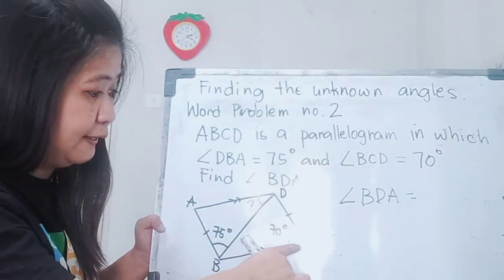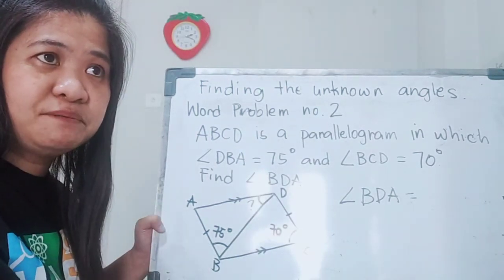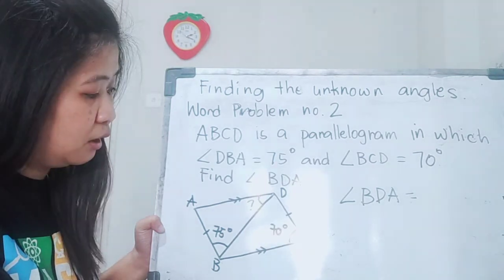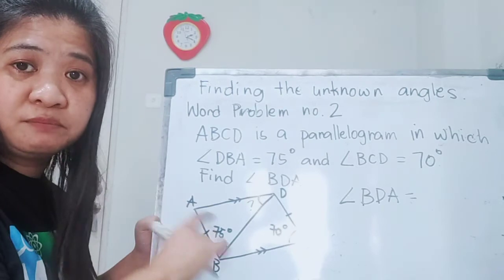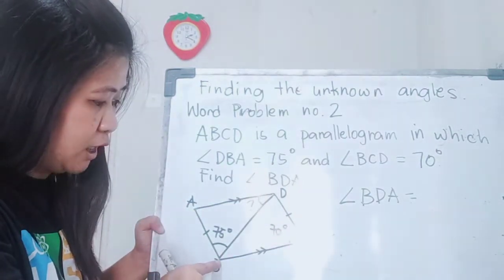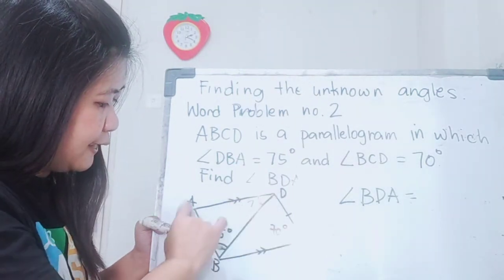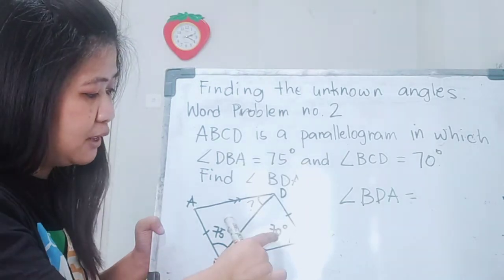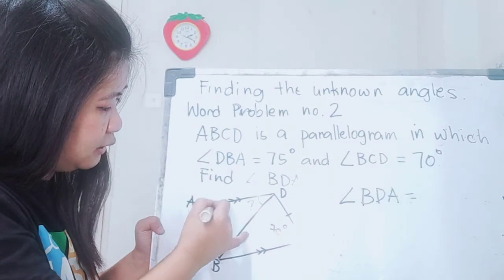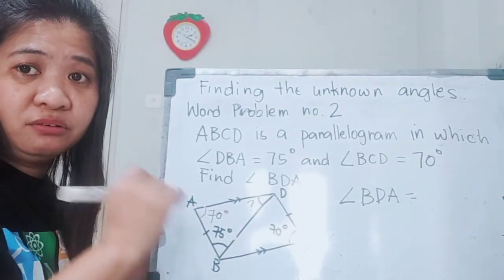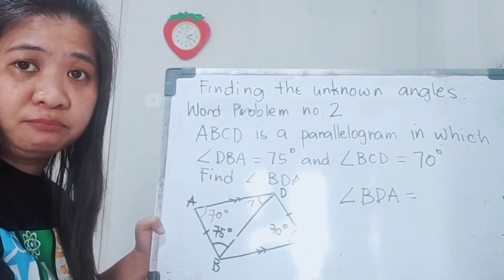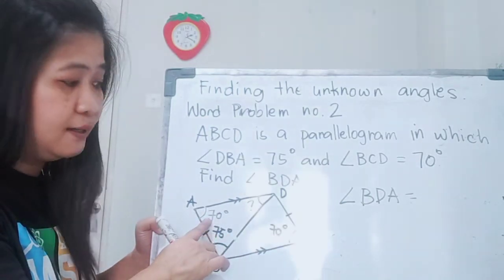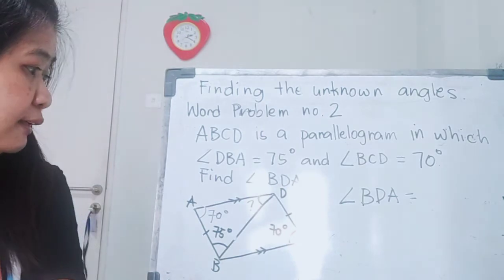Remember the concept about parallelograms? We have two pairs of parallel lines. Line AB is parallel to DC, and line AD is parallel to BC. Another concept in our parallelogram is that opposite angles are equal. We have angle BCD which is 70 degrees. The opposite of this angle is angle DAB, so we can write 70 degrees there. We can now find angle BDA.